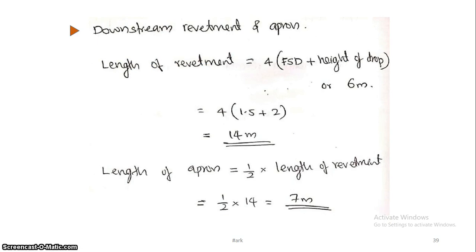Now, downstream revetment and apron. For the downstream revetment, the length is given as 4 times the full supply depth (FSD) plus the height of drop, with a minimum of 6 meters. So: 4 times FSD plus height of drop. The full supply depth is 1.5 meters and the height of drop is 2 meters.